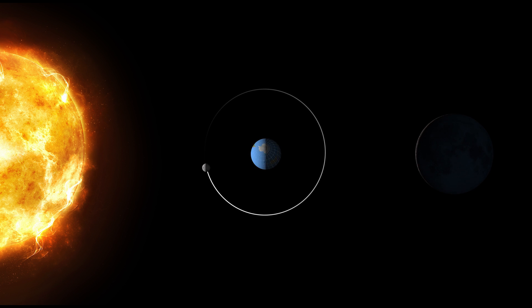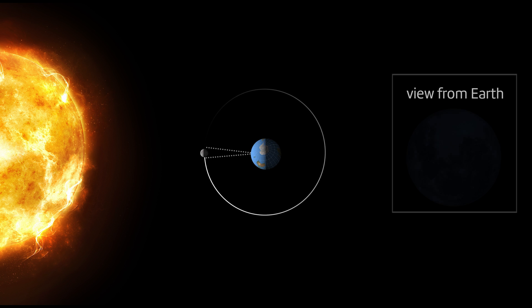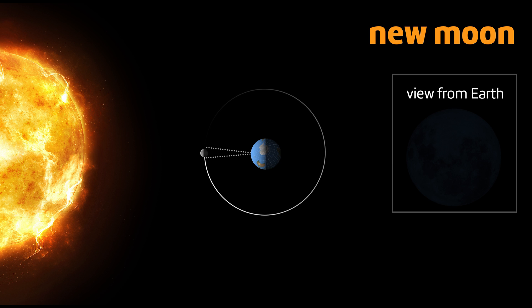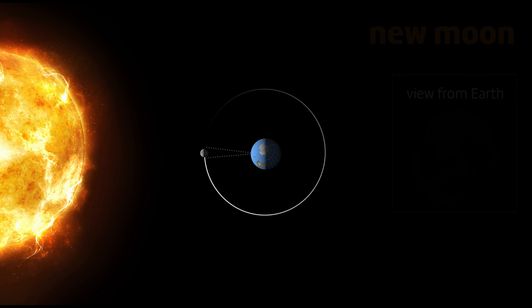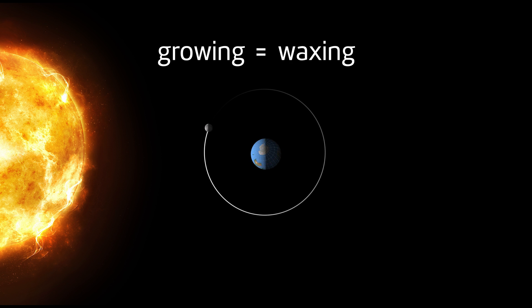When the Moon is on the same side as the Sun, we can only see its shadowed side. We call this a New Moon. As the Moon moves along its orbit, we see more and more of the bright side. The Moon appears to grow, and we say that it's waxing.